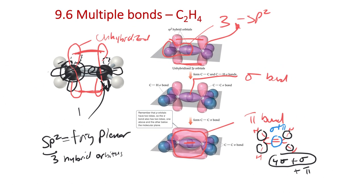Hybrid orbital theory allows us to understand the pi bonding in double-bonded molecules: one of the two bonds in a double bond is sigma (sp2/sp2 overlap on the bond axis), and the second bond is that planar-type pi bond.